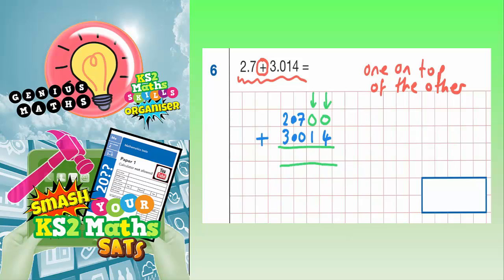So let's just draw a couple of lines ready for our answer. So don't forget we're adding. So 0 add 4 is 4. 0 add 1 is 1. 7 add 0 is 7. And 2 add 3 is 5.